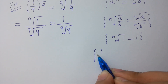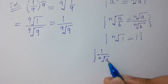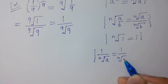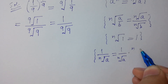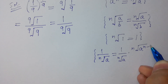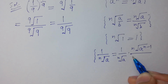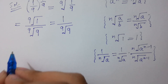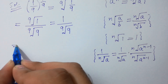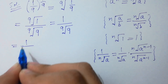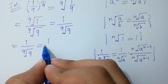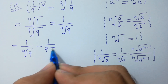Now, 1 over n root a equals 1 over n root a times n root a to the power n minus 1. So 1 over 9 root 9 will be equal to 1 over 9 root 9 to the power n minus 1.